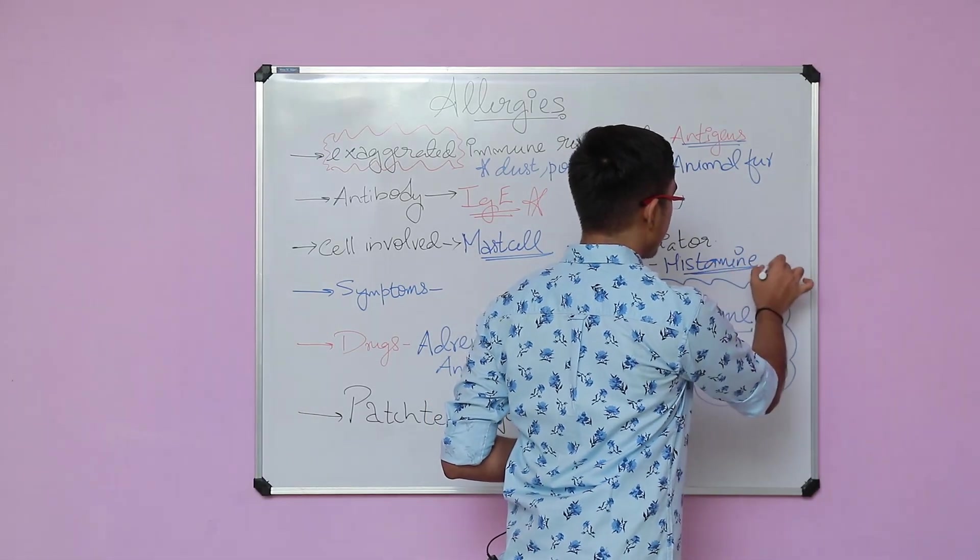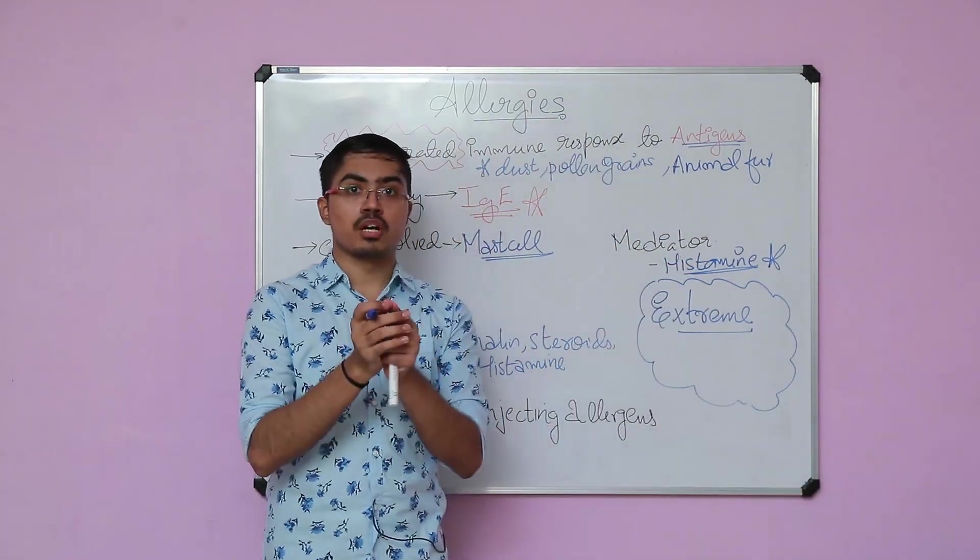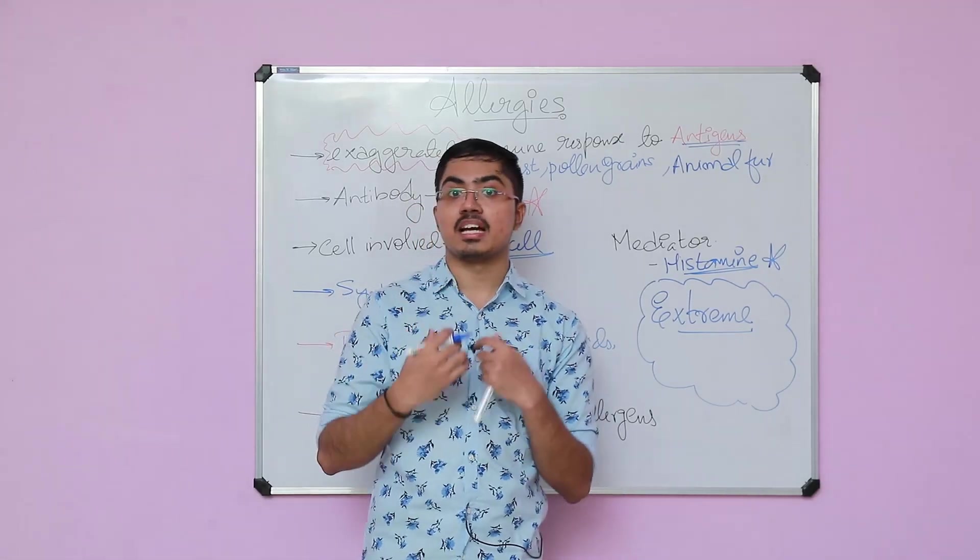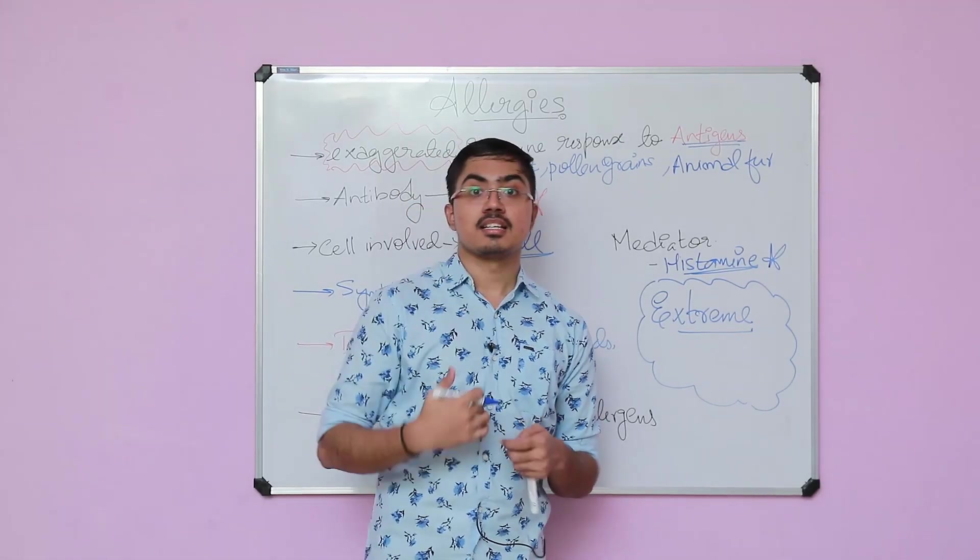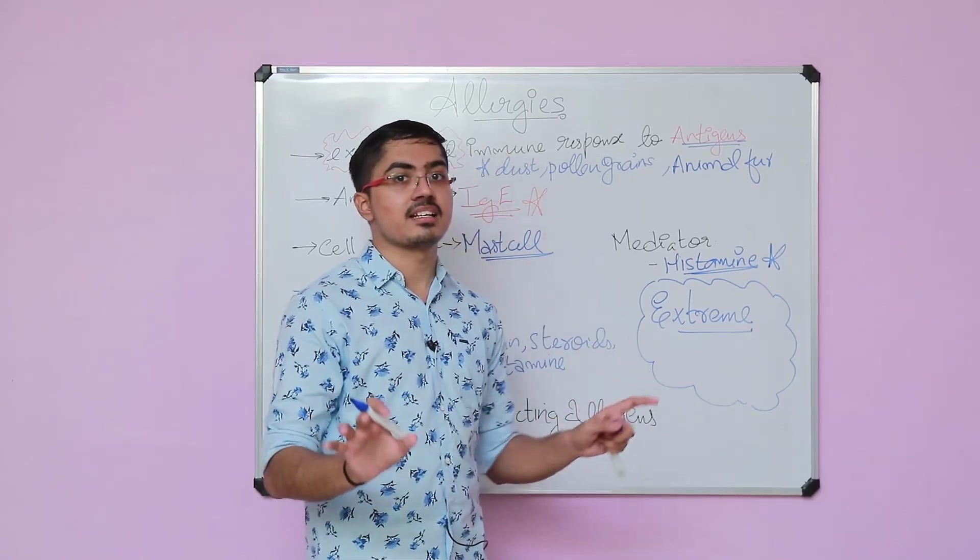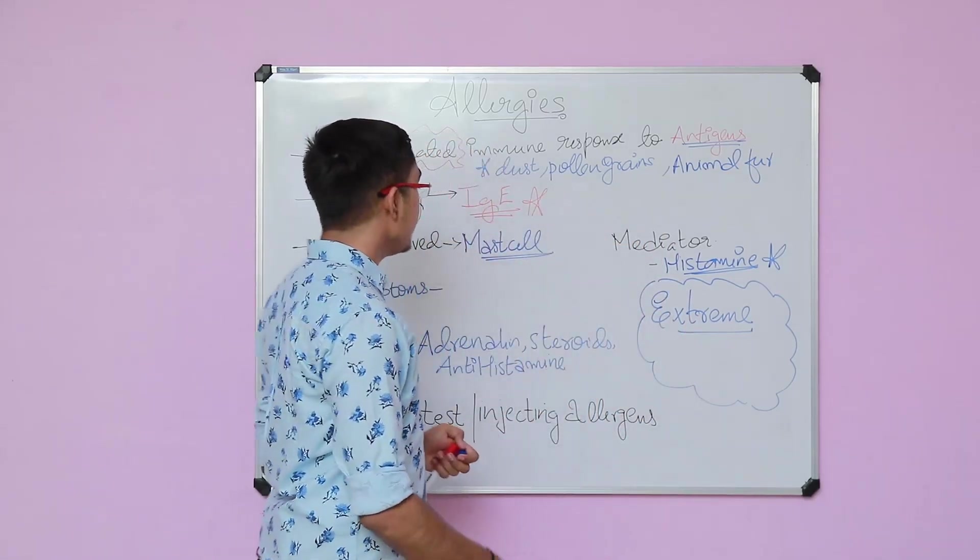Histamine is one of the most important mediators of allergy. It causes bronchoconstriction, constricting your bronchi and trachea so that you will have problems in breathing. That is why you will have respiratory difficulty. Difficulty in breathing is a very characteristic classical symptom seen in allergy.